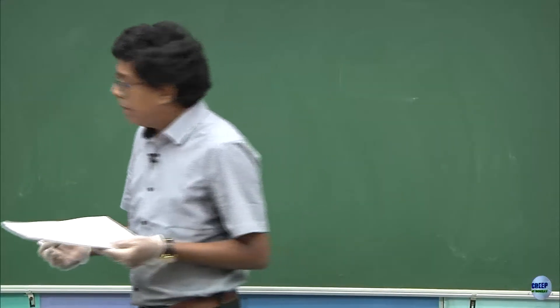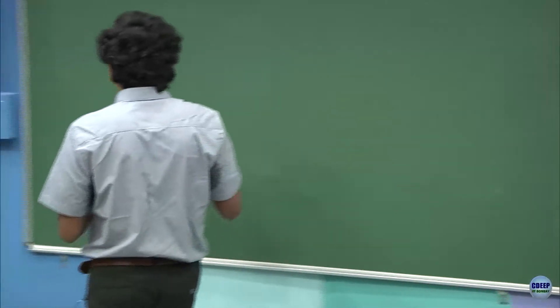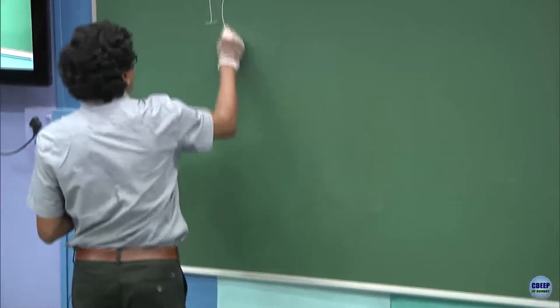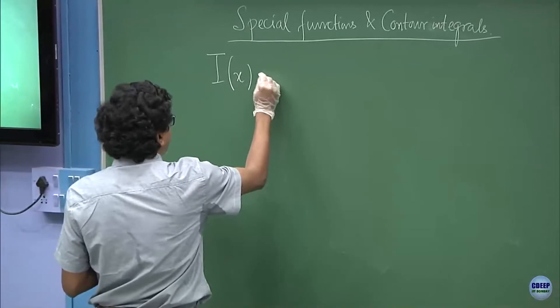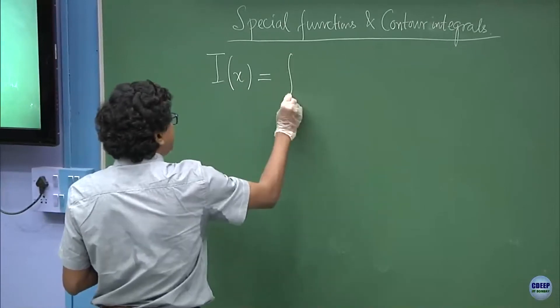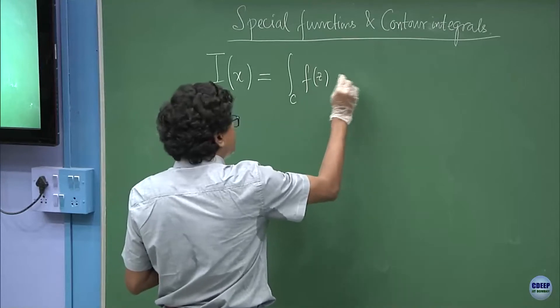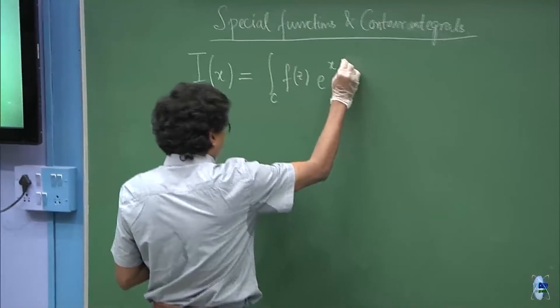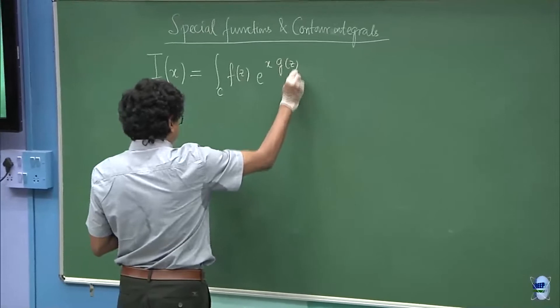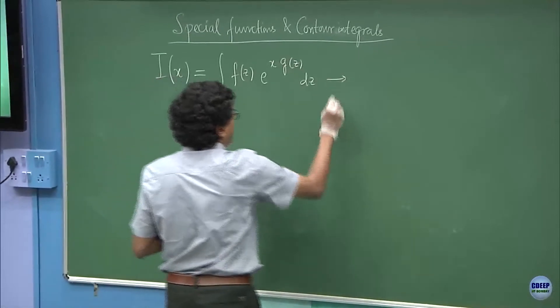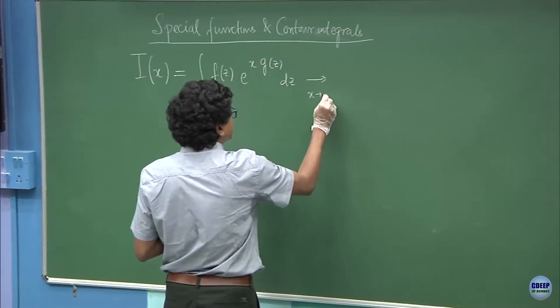Let me motivate that by telling what kind of integrals we're dealing with. Let me once more remind you that if we have integrals like this—contour integrals f of z times e to the power of x times g of z dz—and I am interested in x large,